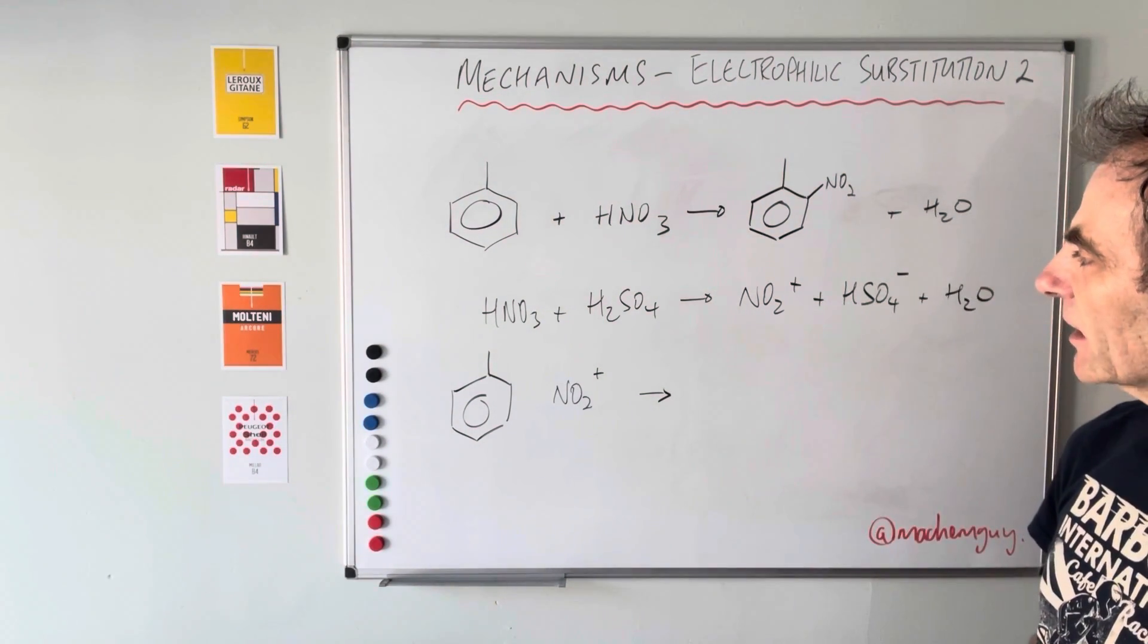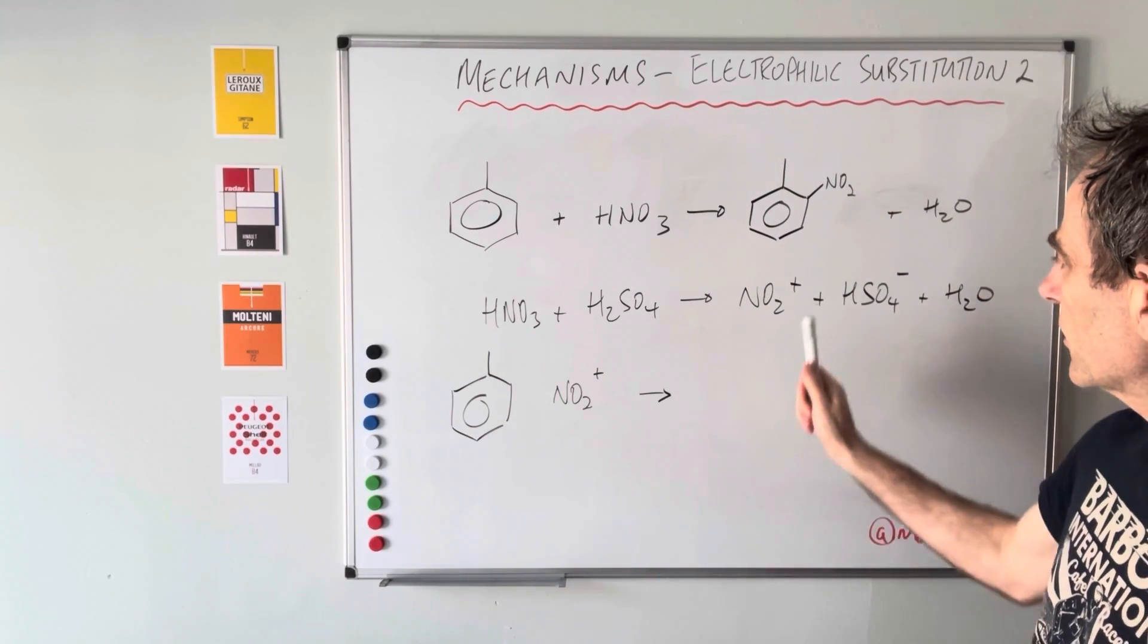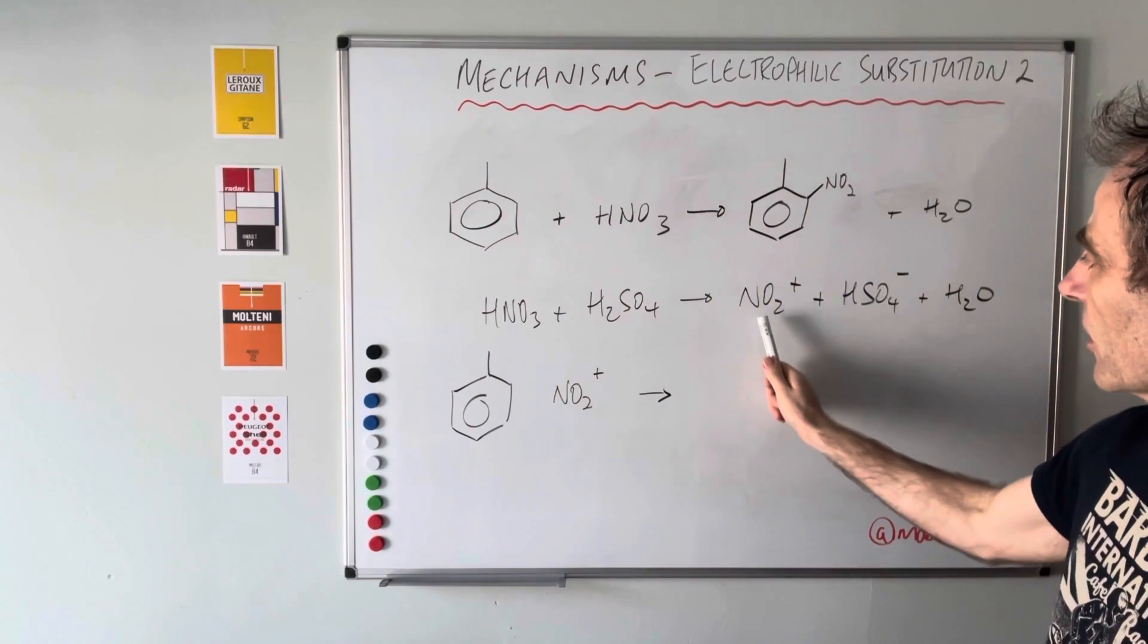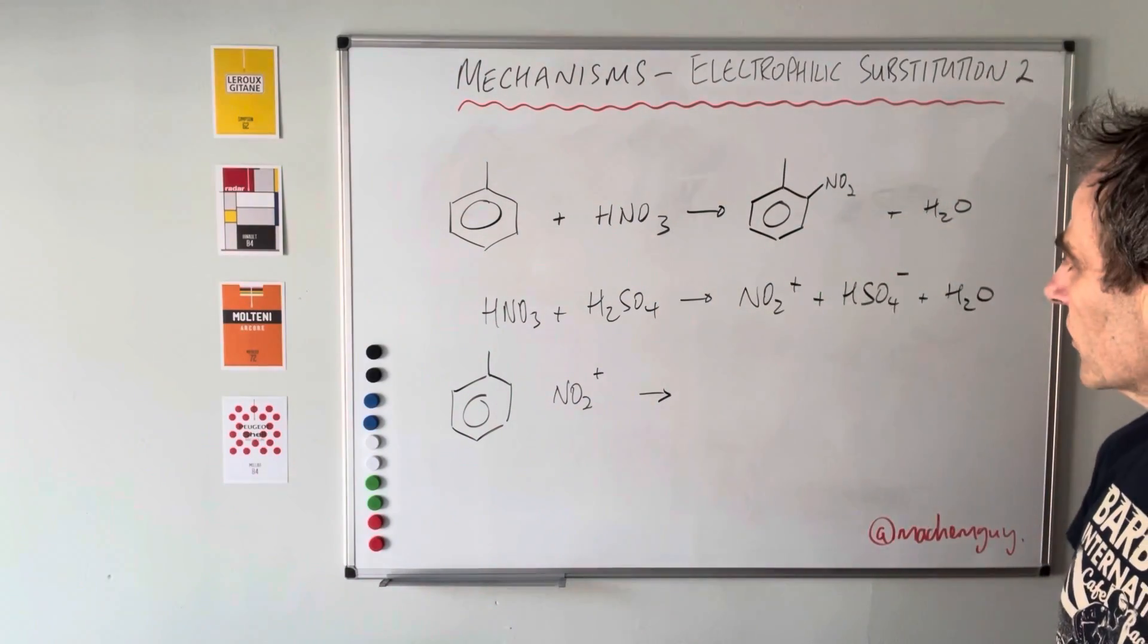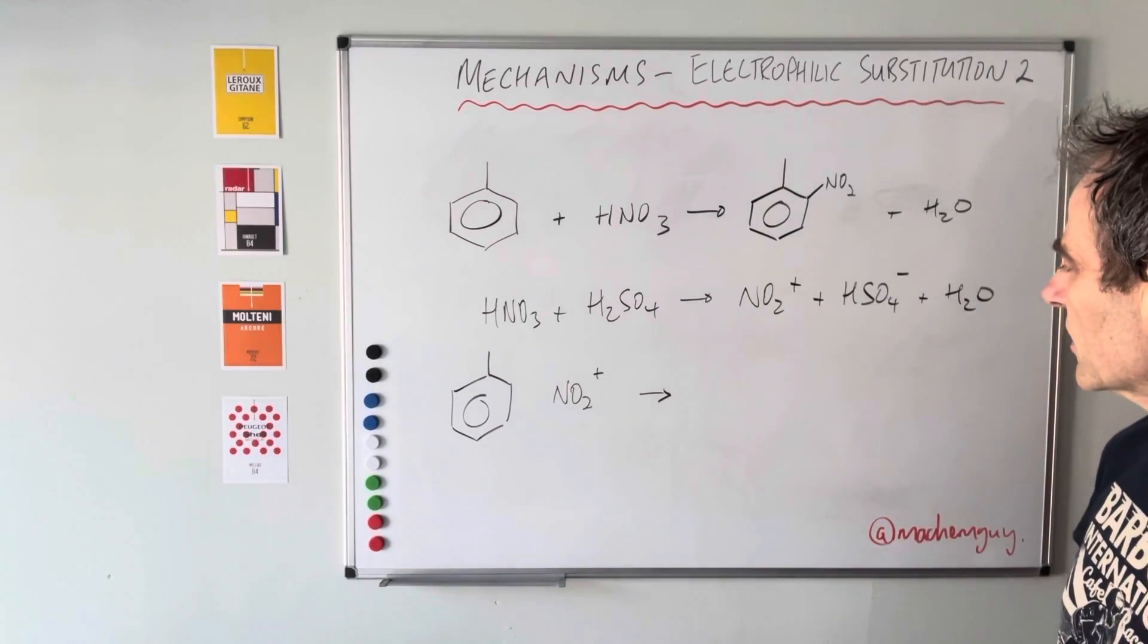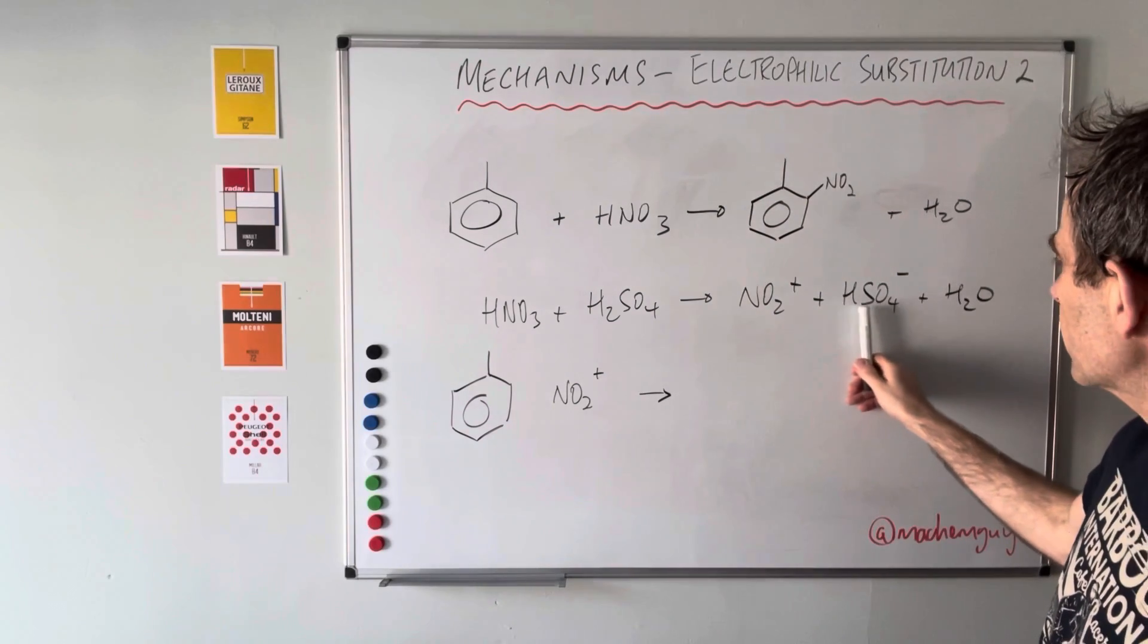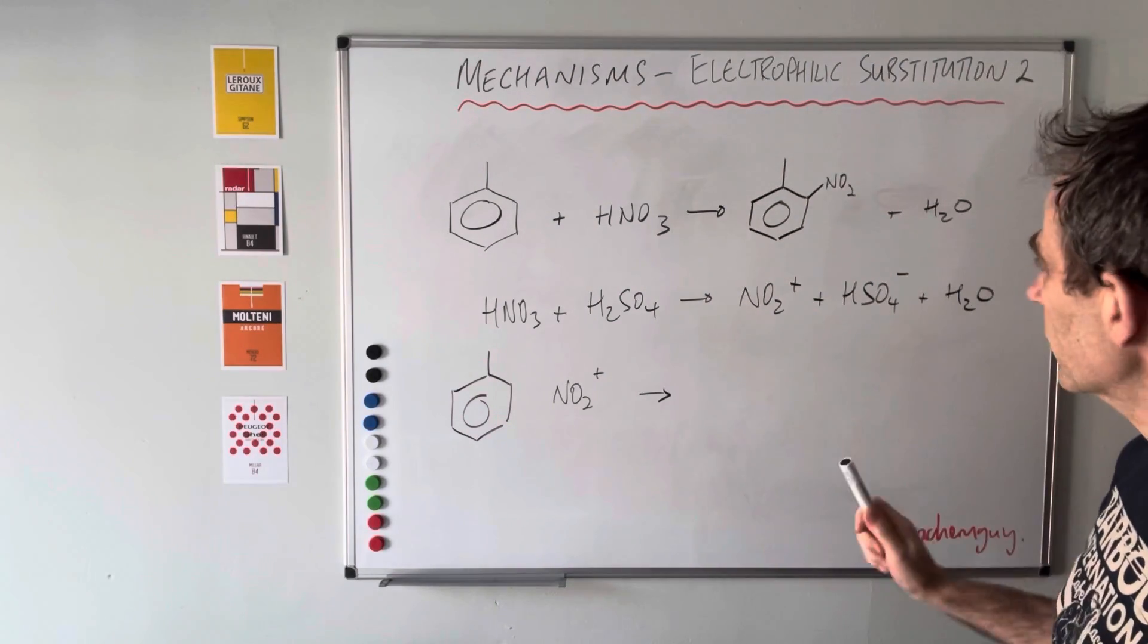In terms of the mechanism, the first step is the two concentrated acids react together to form the nitronium ion. This is the important product of that reaction - that's the electrophile, the electron pair acceptor, and that's what's going to react with the methyl benzene. We also get an HSO4 minus ion and there's that water molecule formed there.